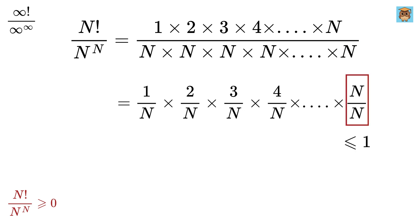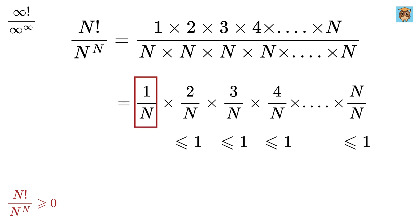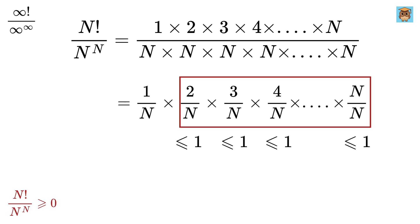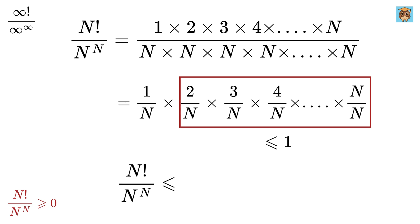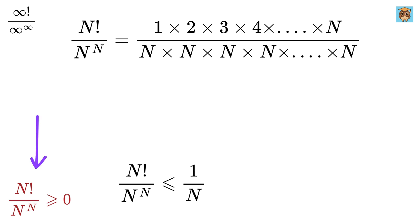Each ratio k/n is less than or equal to 1. So every ratio in the product is less than or equal to 1. Now, all these ratios are less than or equal to 1, so their overall product is also less than or equal to 1/n. Therefore n factorial divided by n to the power n is less than or equal to 1/n.